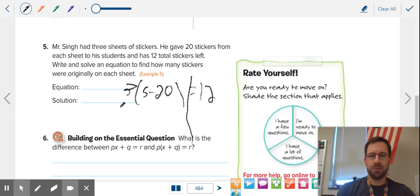So, first step, we have to get rid of this three. The opposite of times three is divided by three. Over here, 12 divided by three is four.